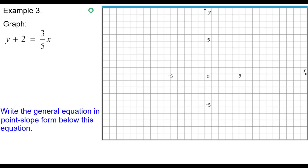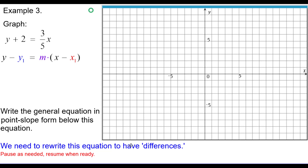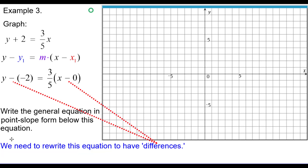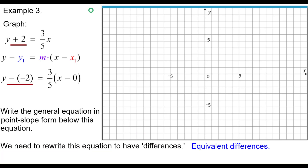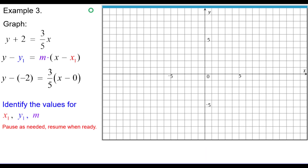Third example. We need to rewrite the equation to have differences before writing it in point-slope form. Rewrite y plus 2 as y minus negative 2, and use 3 fifths times the quantity x minus 0 as a placeholder for x sub 1. Make sure the rewrites are equivalent, not just differences. Identifying values: y sub 1 is negative 2, slope is positive 3 fifths, and x sub 1 is 0.